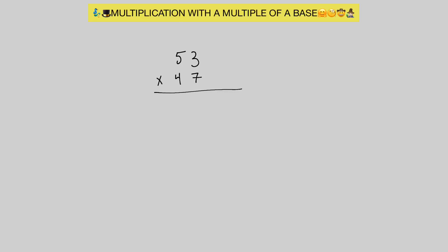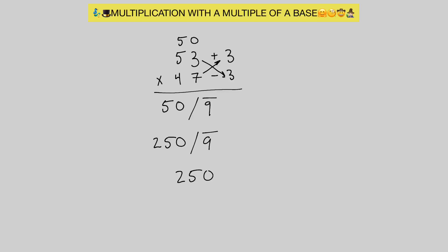Here we have 53 times 47 — one number above the base and one below. We're going to work off a base 50. 53 is plus 3 away from 50, and 47 is minus 3 away from 50. For our left hand side, we either add 3 to 47 or subtract 3 from 53 — either way we get 50. For our right hand side, positive 3 times negative 3 gives us negative 9, so we write it as 9 bar. We multiply the left hand side by 5 since we're working off base 50: 50 times 5 gives us 250. So we have 250 and 9 bar.